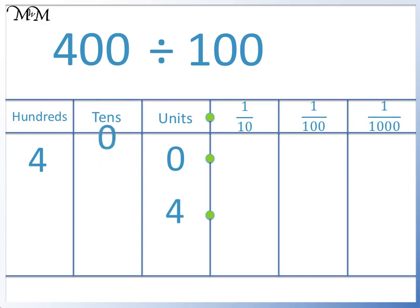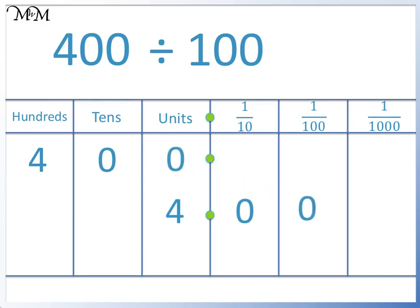The next two digits follow. So we now have 4.00. If we only have zeros after the decimal point, then we can ignore them. 400 divided by 100 equals 4.